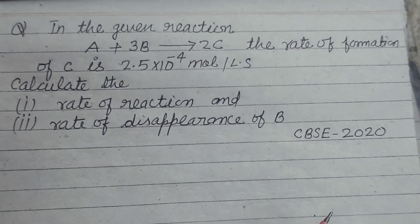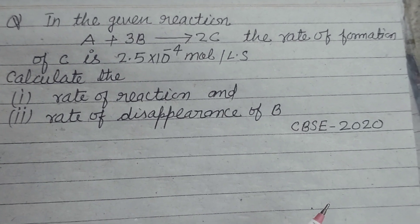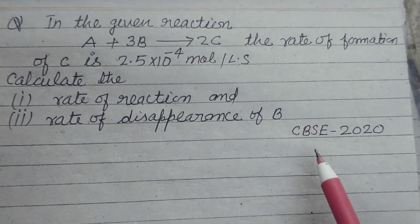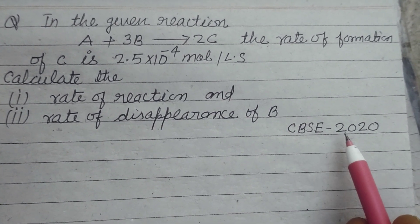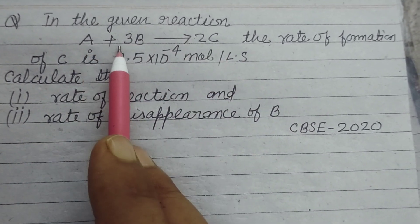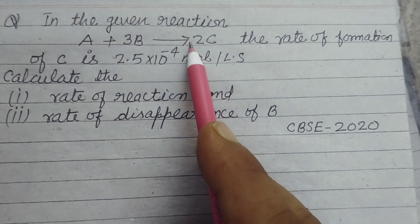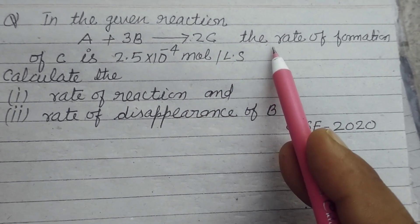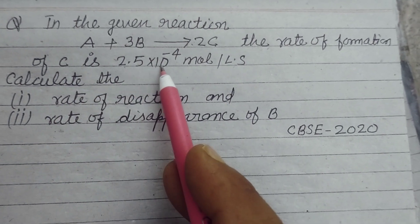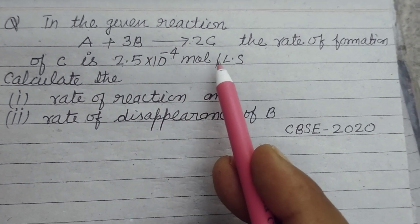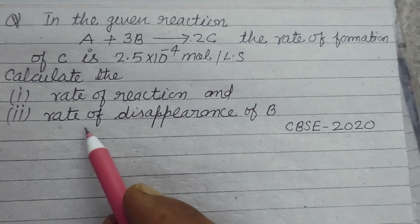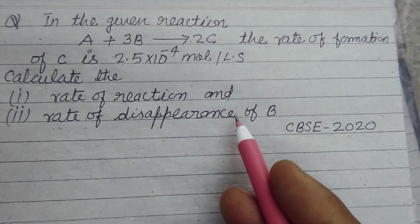Hello students, warm welcome to this YouTube channel. This is a question from CBSE Class 12 Chemistry asked in the 2020 board exam. In the given reaction A + 3B → 2C, the rate of formation of C is 2.5×10⁻⁴ mol per liter per second. Calculate the rate of reaction and the rate of disappearance of B.